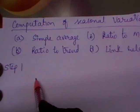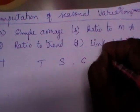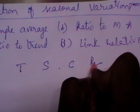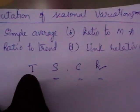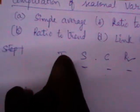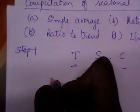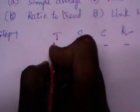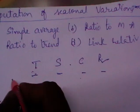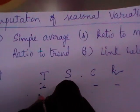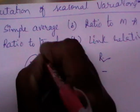Up to now we have discussed the four components of time series: trend, seasonal variations, cyclic variations, and random component. Under time series analysis, we are going to study the effect of each of these four components on the time series data and eliminate their effects. In the first section, we discussed how to analyze the trend using four methods: semi averages, graphical method, moving averages, and the principle of least squares.